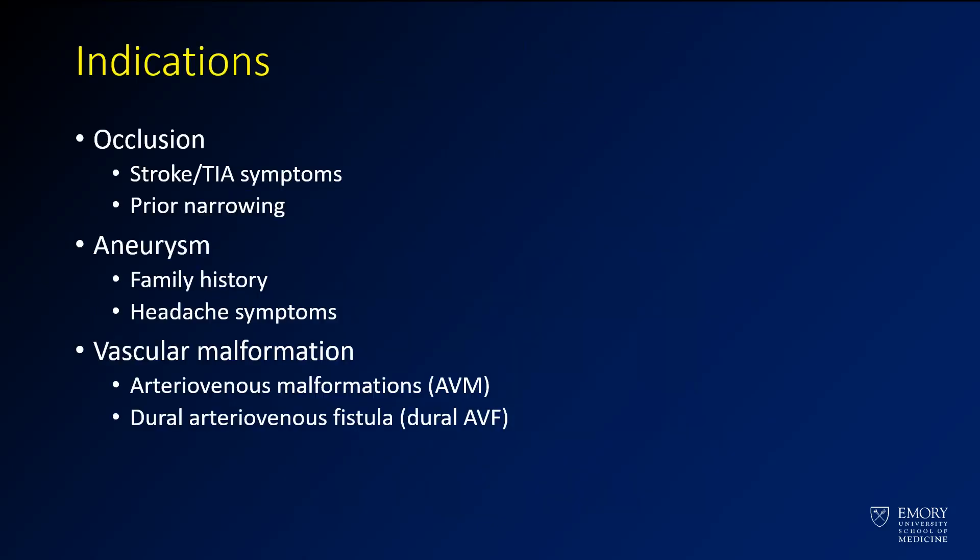First, some of the indications for MR angiograms you should know about. You'll typically be looking for occlusion, aneurysm, or vascular malformation. Many times patients will have strokes or TIA symptoms, or a history of stroke or concern for stroke, and you'll be doing an MR angiogram to get a closer look at those vessels to see if there's a vascular cause that you can identify.